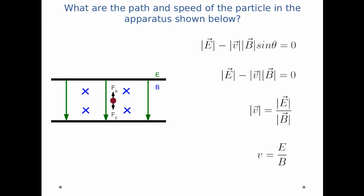So what does this mean? If we send in a particle with the velocity E divided by B, it will pass through this velocity selector completely undeflected.